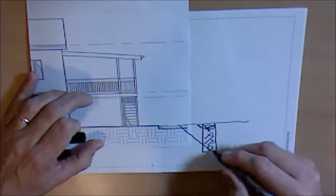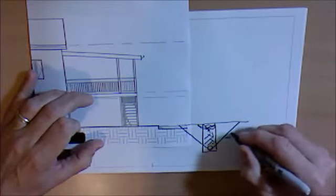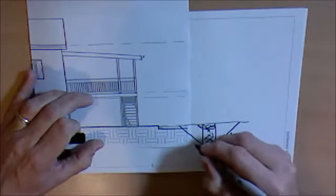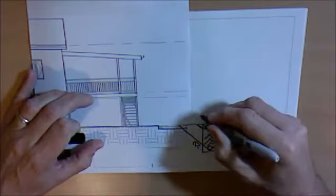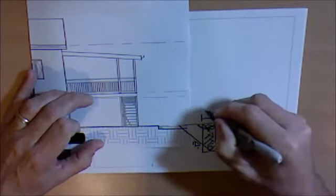Sewer zone of influence is an imaginary line drawn at 45 degrees from the bottom of the sewer. Some councils won't allow you to build footings in this area at all.